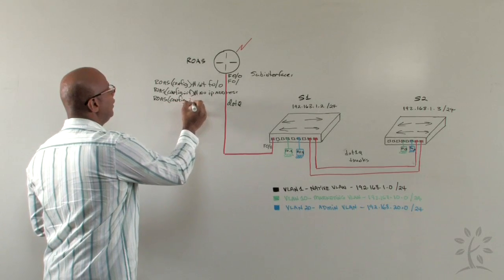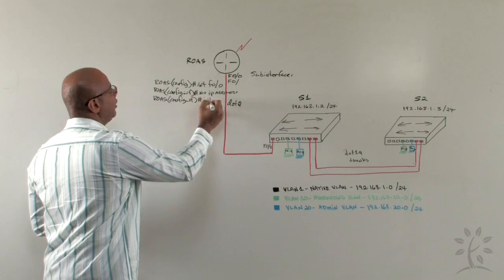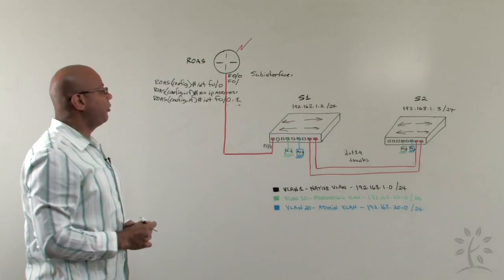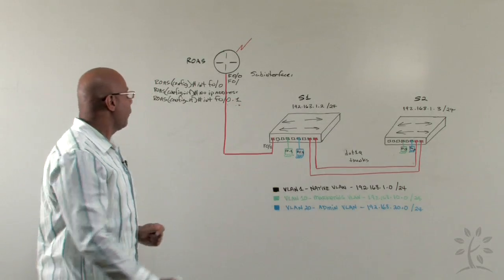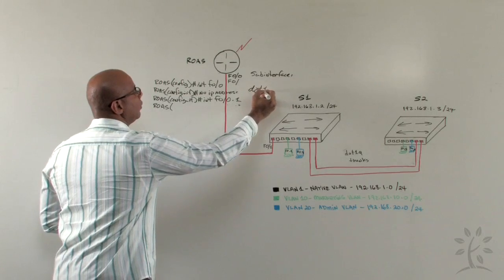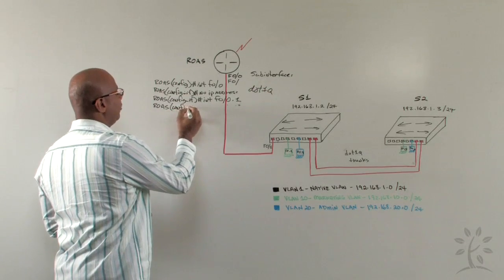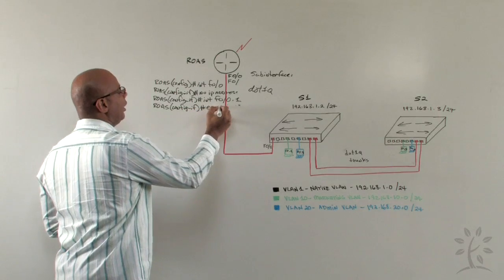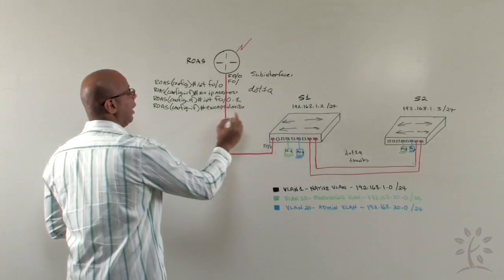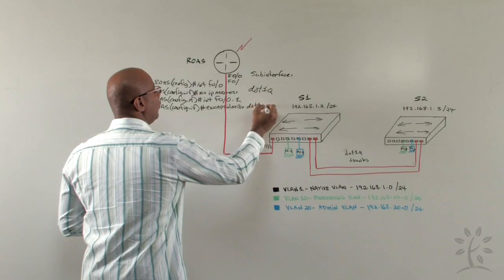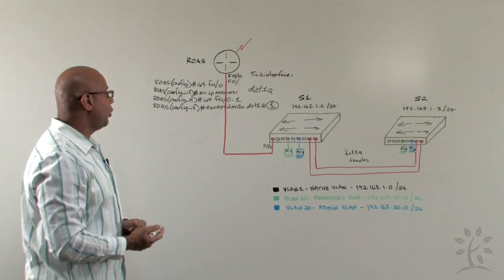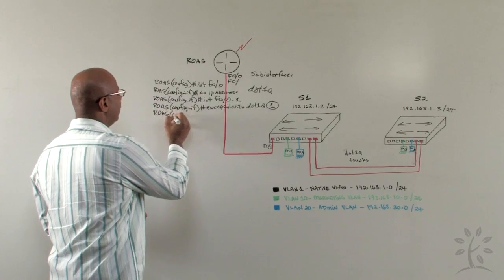To do that, we type the command interface FastEthernet 0.0.1, that will create the first sub-interface that we're going to use for VLAN 1. Then we have to tell that router how to trunk, as we talked about, 802.1Q. So in the same interface configuration mode, we type encapsulation 802.1Q, and we have to follow with a space and a VLAN number that we're creating that sub-interface and IP address for.